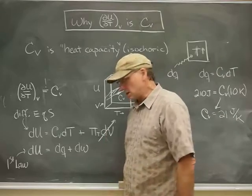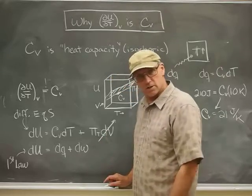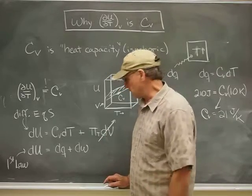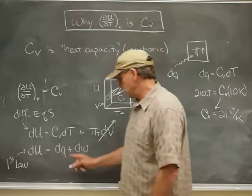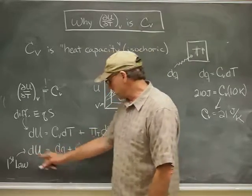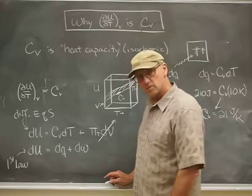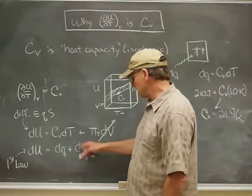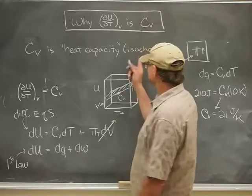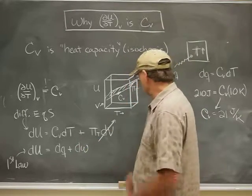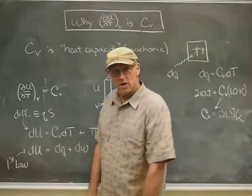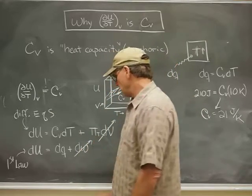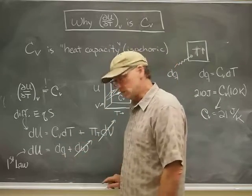Another key equation here is the first law in differential form. The amount of energy that the system changes must equal dQ, the heat that goes in, plus the work that's done. Again, since this is an isochoric process, there's no change in volume, so the work must be zero and I have dU equals dQ.